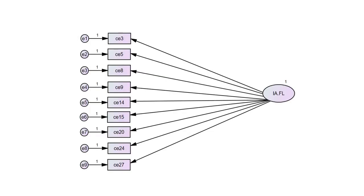Here you can see a one-factor model that's specified. We're going to be working with items from the EBI, the epistemic belief inventory. Each of these rectangles represents an item from the scale designed to measure this particular latent variable. I'm not going to walk through all the details of setting up a CFA model since I'll assume you already know how to do this, but I'll include a link to another CFA video. The items in this model represent the ia.fl factor.